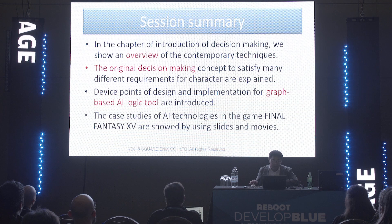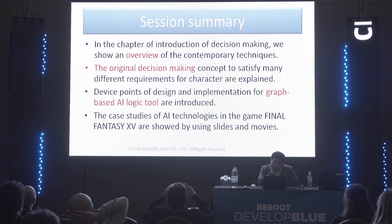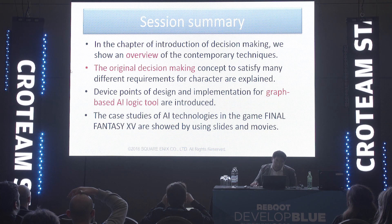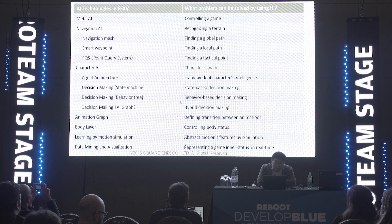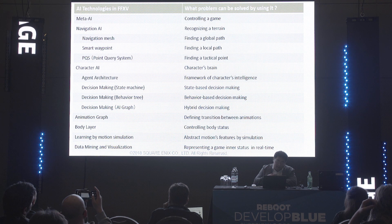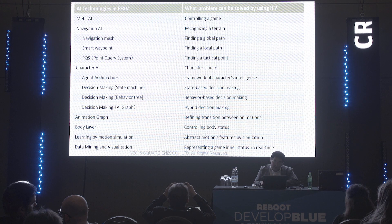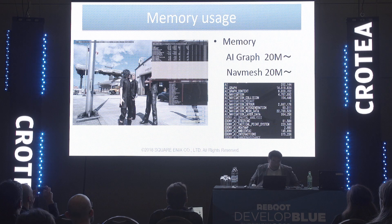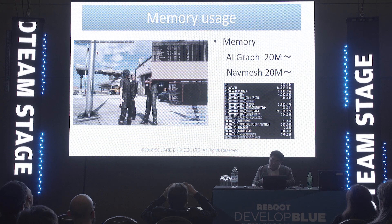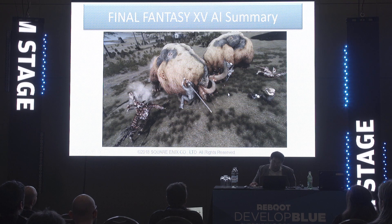Summary: I explained character AI, meta AI, and navigation AI. Especially for character AI, I explained the original graph-based AI logic tool developed by Square Enix. This is a list of AI techniques used in Final Fantasy XV. Each technique is very simple, but by combining many simple AI techniques we can produce complex AI behaviors in complex terrains. Memory usage is very strict, but the AI graph uses 20 megabytes and the nav mesh system uses 20 megabytes — a very compact system.